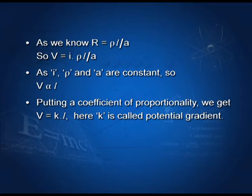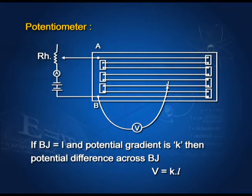Here K is a constant called potential gradient, and its SI unit is volt per meter. If we calculate the value of K, then we can calculate the potential difference across any section of the wire. If any cell gives a null point across a length L, then the potential difference across that length L equals V = K·L.